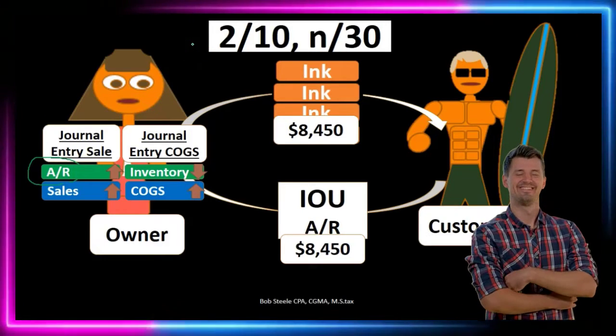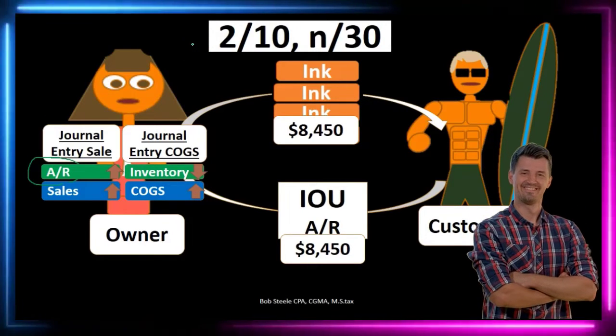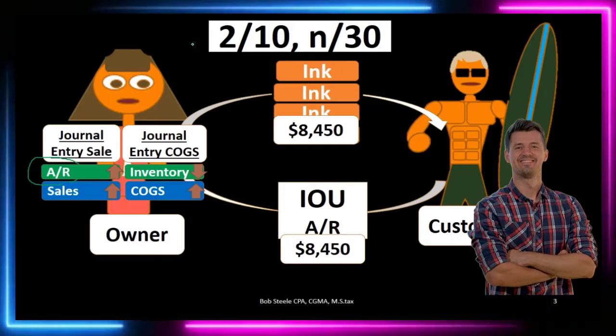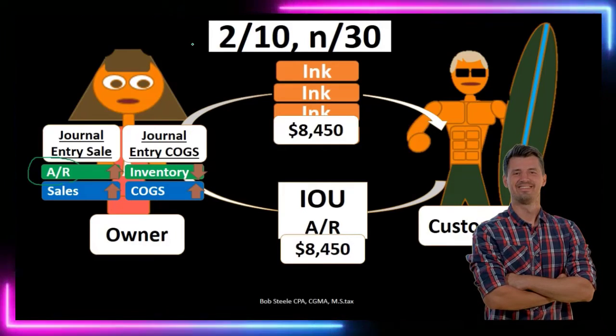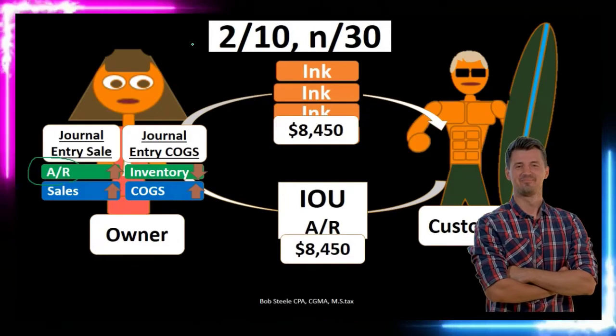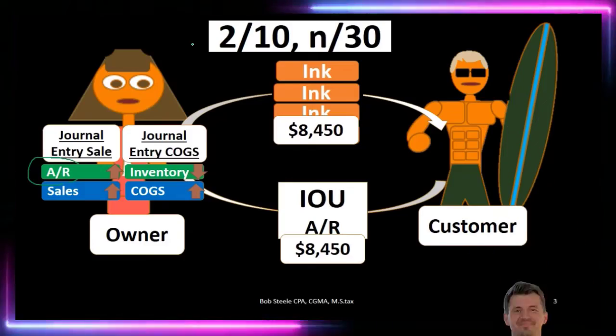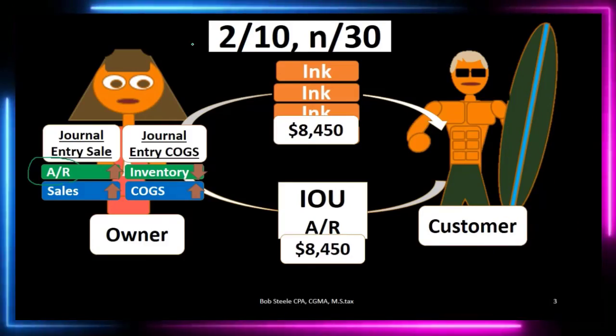It could say 2/10, n/30. That would be more complicated terms, meaning there's a 2% discount if paid within 10 days; otherwise, payment is due within 30 days.